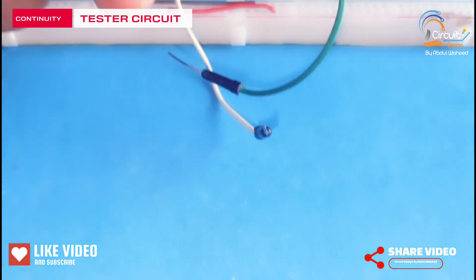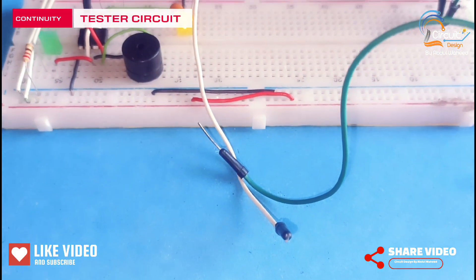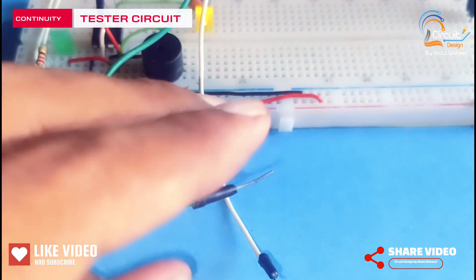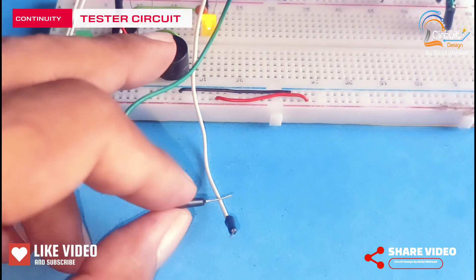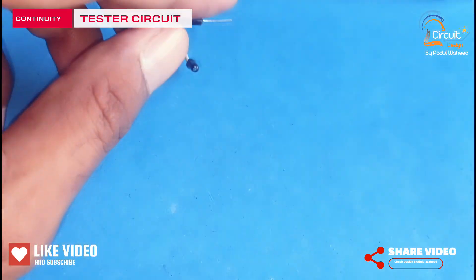Here I use two probes for testing. When I connect green and white wire, then buzzer and green LED will be on.